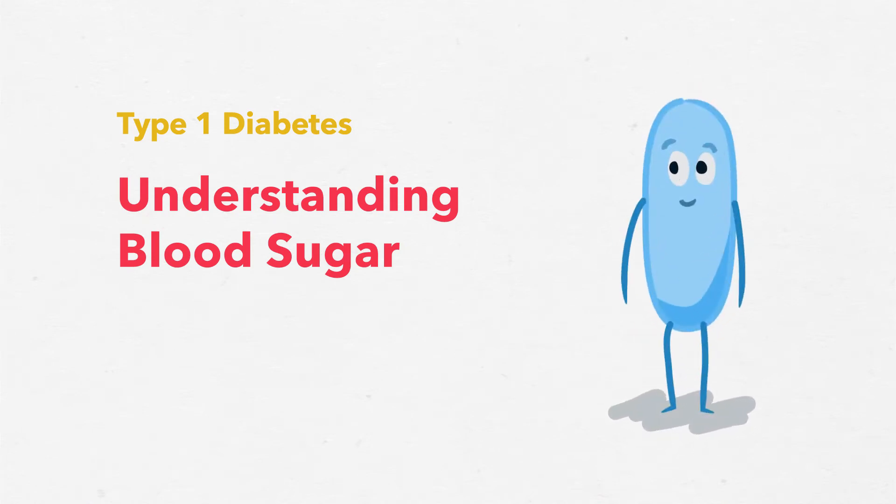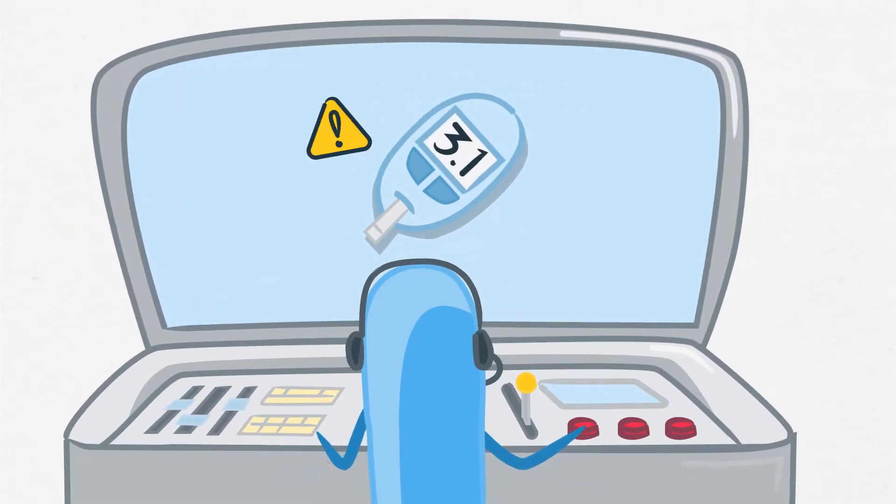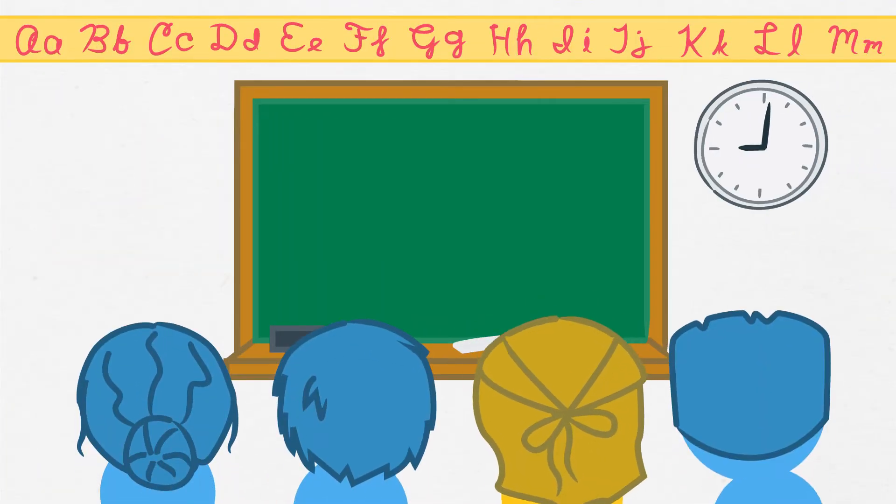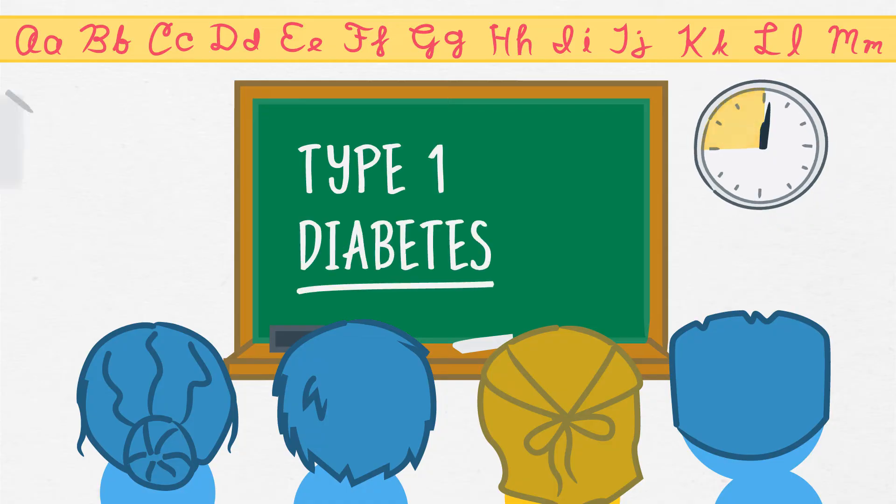Understanding Blood Sugar – The Basics for School Staff. Checking blood sugar is one of the most important tasks of managing type 1 diabetes. If you have a student with type 1 diabetes in your classroom, even for part of the day, it's important to learn the basics.